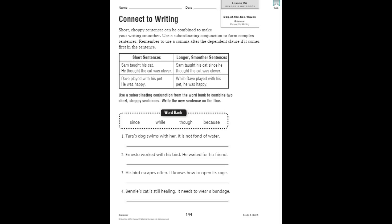We're going to practice combining short, simple sentences into complex, longer, smoother sentences. Turn in your reader's notebook to page 144. Again, it says short, choppy sentences can be combined to make your writing smoother. You can use a subordinating conjunction for complex sentences. Remember to use a comma if the dependent clause comes first in the sentence.